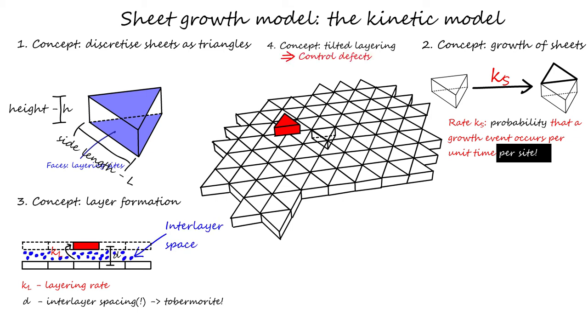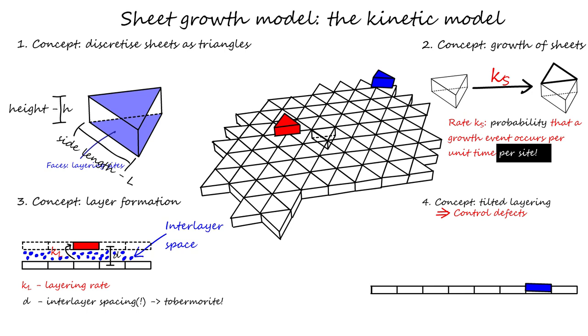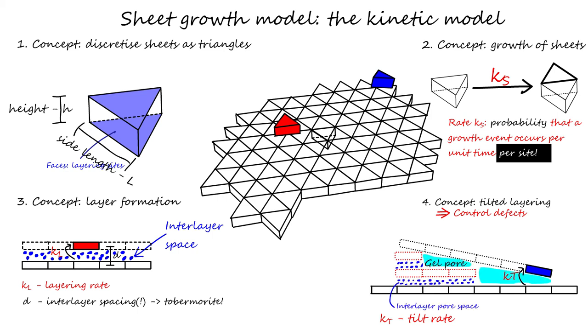The fourth important concept is that the triangles can also slightly tilt during layering. These newly inserted triangles create a defect, as now seen in two dimensions. The tilted side creates defects which cannot be filled anymore. These are referred to as gel pores. The angle of 11 degrees was chosen based on NMR arguments, which we refer to our paper for.